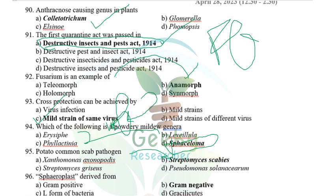Potato common scab is caused by Streptomyces scabies. Spiroplasma is derived from gram-negative bacteria — if it is a protoplast it is gram-positive; spiroplasma is gram-negative.